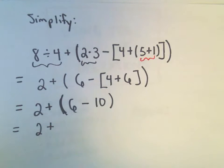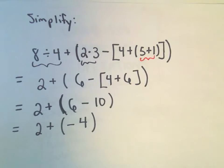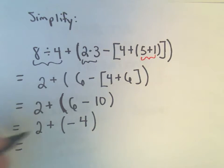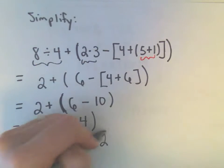Let's keep working inside the parentheses. 6 minus 10 is going to be negative 4. And let's see, 2 plus a negative 4, that's the same thing as 2 minus 4. And 2 minus 4 is going to give us negative 2.